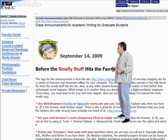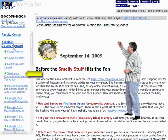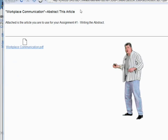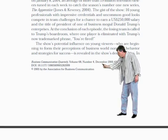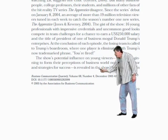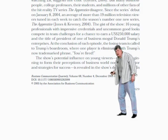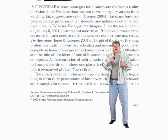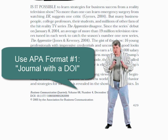Something else I've posted for you: if you look under the content section, here is the actual article that you're going to abstract. It's called Workplace Communication. It's a big PDF, but scroll down and look at the information at the bottom of the page. This is the information that you're going to use to write your APA reference citation. I want you to use format number one — journal with a DOI — for your reference citation format, and you can find that in your APA 6th edition style manual.